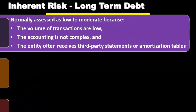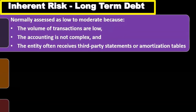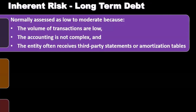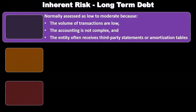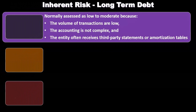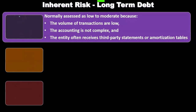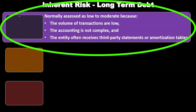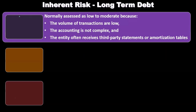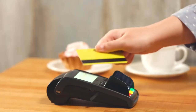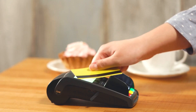Now we're going to take a look at inherent risk. We're going to go through our process as we have done with other accounts: take a look at inherent risk, take a look at control risk, then consider the types of testing related to controls and the types of testing related to substantive tests. Inherent risk is normally assessed at a low to moderate level because the volume of transactions is typically low when thinking about long-term debt, and therefore the inherent risk can be considered to be lower.